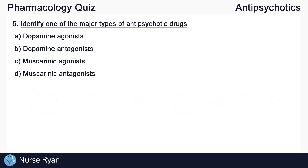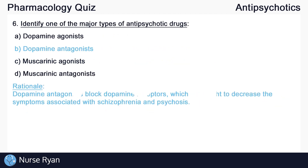Question number six: identify one of the major types of antipsychotic drugs. The answer here is B, dopamine antagonists. Dopamine antagonists block dopamine receptors, which is thought to decrease the symptoms associated with schizophrenia and psychosis.